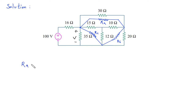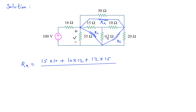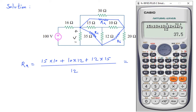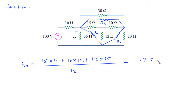Now to find Ra: Ra is equal to (15×10 + 10×12 + 12×15) divided by 12 Ohm. So this will be (15×10 + 10×12 + 12×15) divided by 12, which gives 37.5 Ohm.